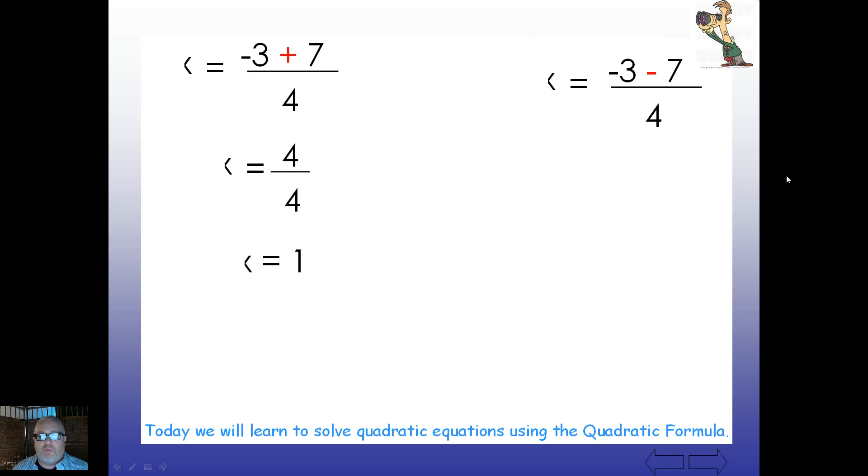What about the right-hand side? Well, if you're careful there, negative 3 subtract 7 is negative 10. Negative 10 over 4 is negative 5 over 2. And what's our solution set? Negative 5 over 2 comma 1. Well done there.